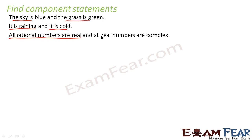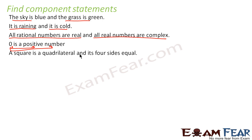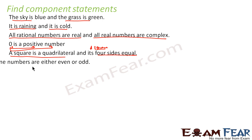Next: 'All rational numbers are real and all real numbers are complex.' There are two component statements: 'all rational numbers are real' and 'all real numbers are complex.' Next: 'Zero is a positive number' — here there are two statements: 'zero is positive' and 'zero is negative.' Next: 'A square is a quadrilateral and its four sides are equal.' The two component statements are 'a square is a quadrilateral' and 'a square has four equal sides.'